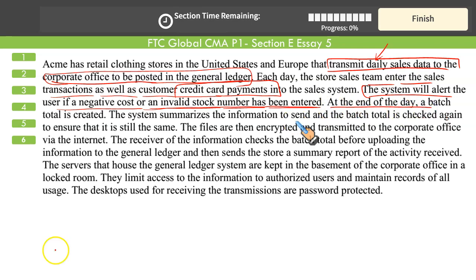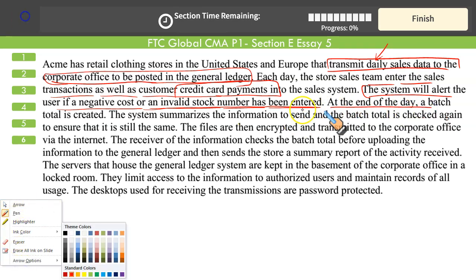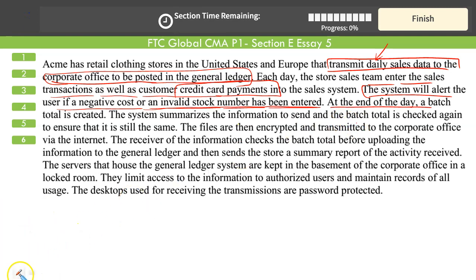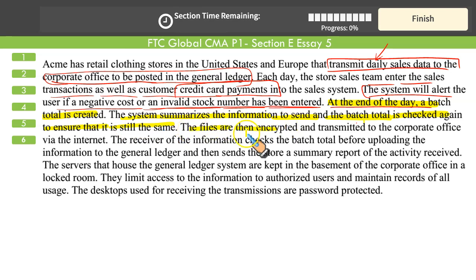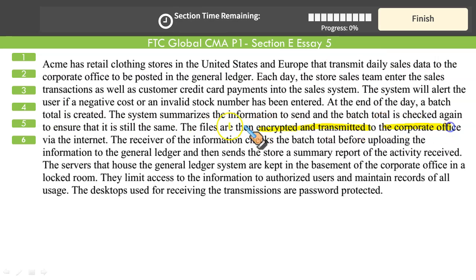At the end of the day, a batch total is created. The system summarizes the information to send, and the batch total is checked again to ensure that it is still the same — no change has been made. The files are then encrypted and transmitted to the corporate office via the internet. The receiver checks the batch total before uploading the information to the journal ledger and then sends the stores a summary report of the activity received.